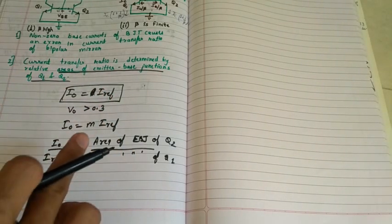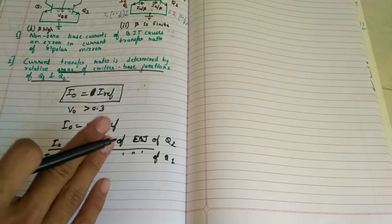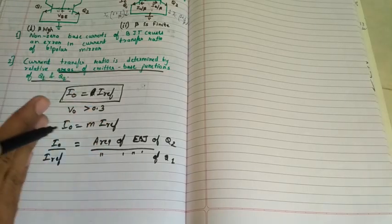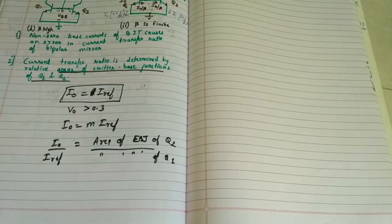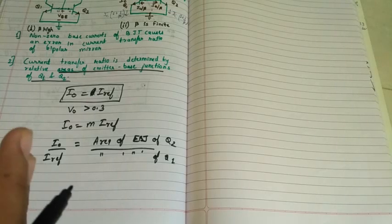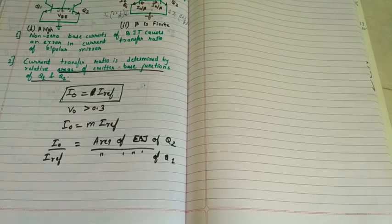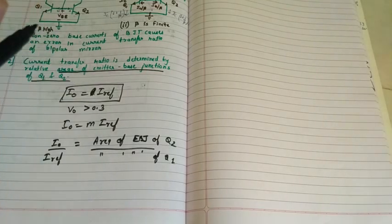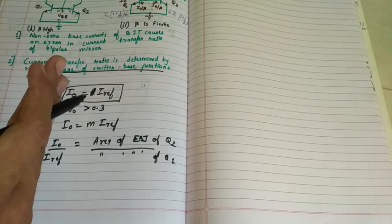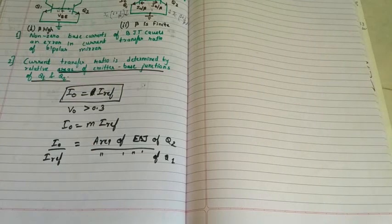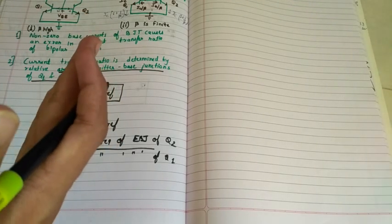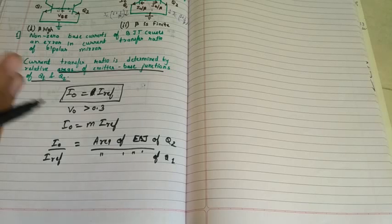If the area ratio M is an integer, one can think of Q2 as equivalent to M transistors, each matched to Q1 and connected in parallel. These M transistors are matched among themselves and all are matched with Q1.